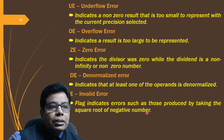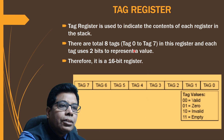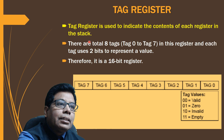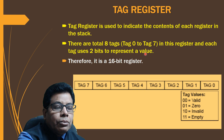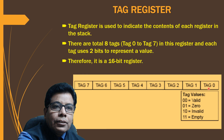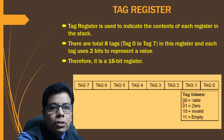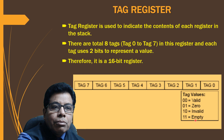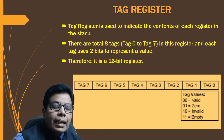The tag register indicates the contents of each register in the stack. There are eight tags (tag 0 to tag 7), and each tag uses two bits, making it a 16-bit register total. The two-bit tag values are: 00 = valid, 01 = zero, 10 = invalid, 11 = empty.